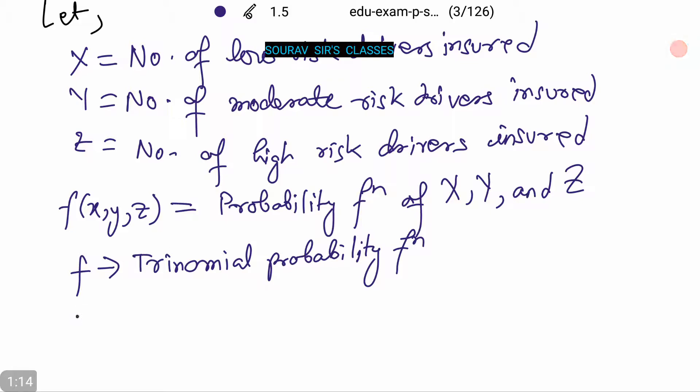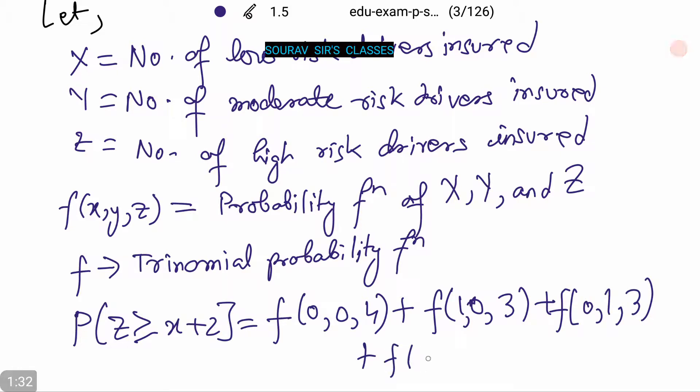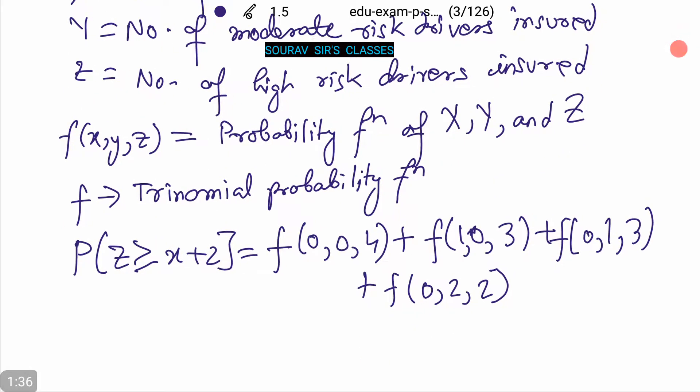Therefore, probability Z greater than or equal to X plus 2 equals f(0,0,4) plus f(1,0,3) plus f(0,1,3) plus f(0,2,2).